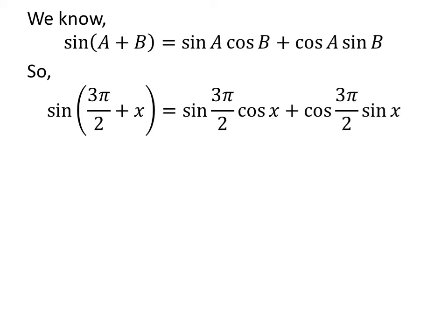Let us apply the above identity for sine of 3 times pi upon 2 plus x. Here, a is 3 times pi upon 2 and b is x. So, sine of 3 times pi upon 2 plus x is equal to sine of 3 times pi upon 2 times cosine of x plus cosine of 3 times pi upon 2 times sine of x.